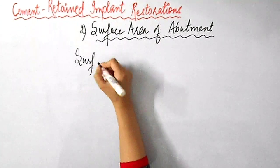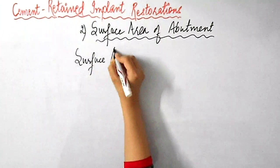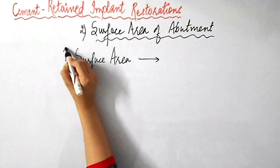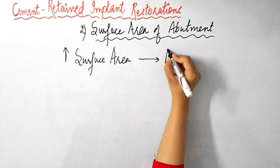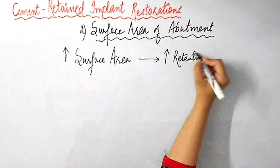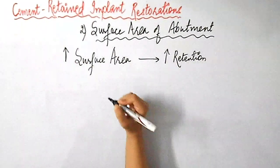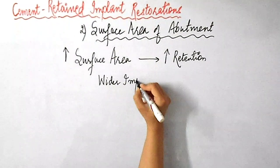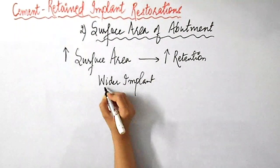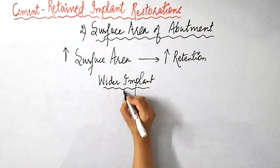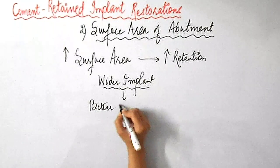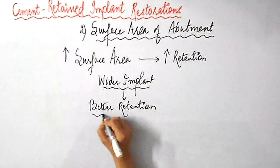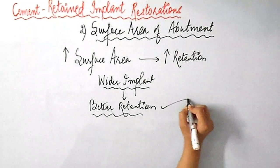The second factor is the surface area of the abutment, which definitely influences the retention of cement retained implant restorations. Greater the surface area, it results in greater retention. A wider implant has better retention due to the increased surface area it provides.